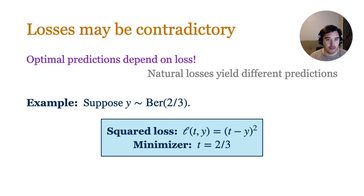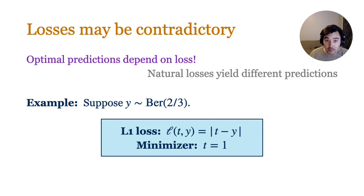Natural choices of losses will require different optimal predictions. For instance, if our task is to predict a Bernoulli random variable with bias two-thirds, then under the squared loss the optimal prediction is the mean of two-thirds, but under the L1 loss the optimal prediction is the median of one. So if we want any hope of loss-independent learning, we need some way of resolving these apparent conflicts between different losses.